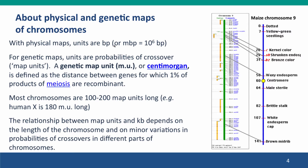For physical maps, the units are base pairs, or more usually when talking about whole chromosomes, megabase pairs — 10 to the 6 base pairs. For genetic maps, the unit is called a map unit, defined as the distance between genes for which 1% of the products are recombinant. So if the recombination frequency is 1%, the distance is one map unit. A centimorgan is just another name, originally developed to commemorate Thomas Hunt Morgan, one of the outstanding original geneticists of the early 20th century. Because most chromosomes have at least one crossover along their length, most chromosomes are at least 100 map units long — for example, chromosome X is 180 map units long.